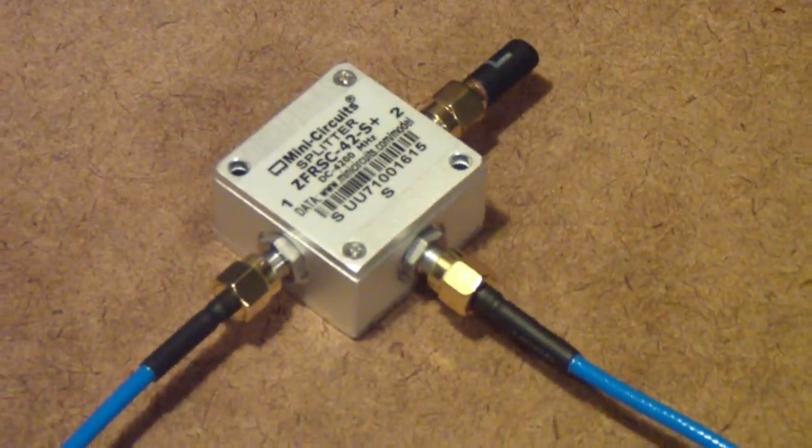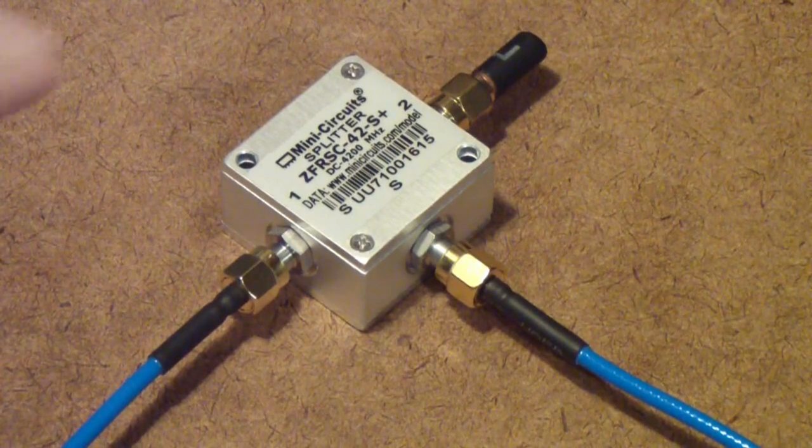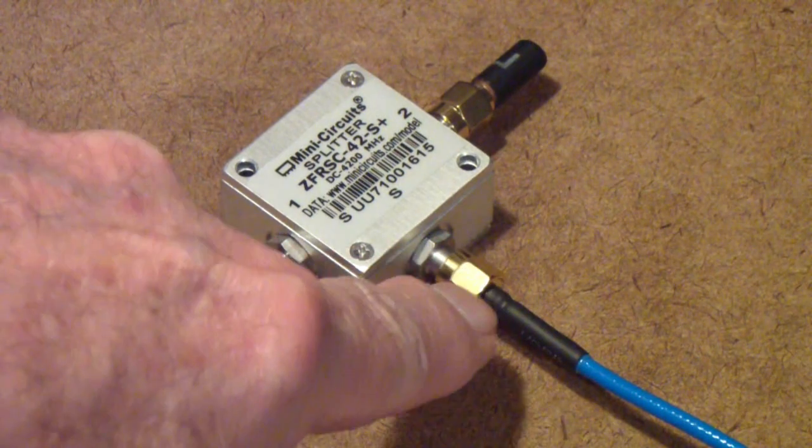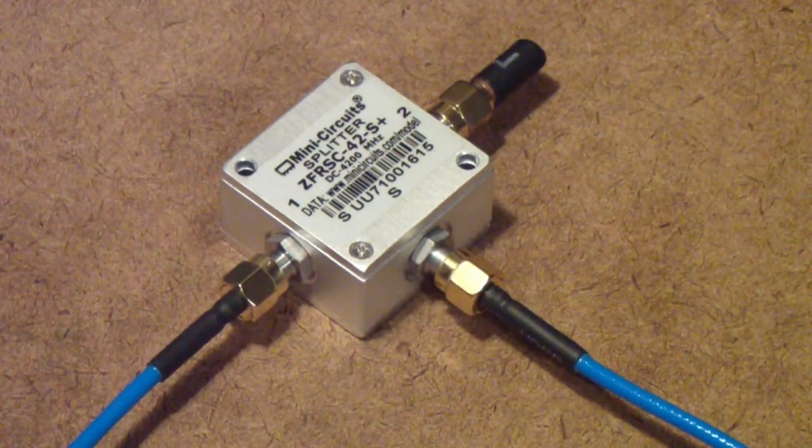For those of you that are wondering, let me also show the splitter. Once again, we're using the 50 ohm termination on port 2, and we're measuring the transmission from the S port to the number 1 port.